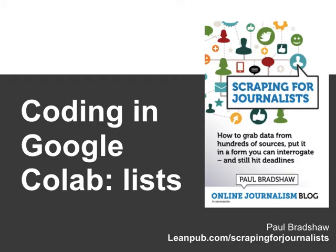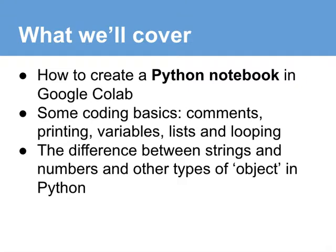One of the easiest places to start coding in Python is Google Colab, which sits in Google Drive. In this video I'm going to talk about how to create a notebook in Google Colab — a Python notebook, which is a way of writing Python code — and then use that notebook to explain some basic concepts in coding: specifically variables, lists, comments and printing, how to loop through a list, and some differences between different types of objects in Python, such as strings of text and numbers.